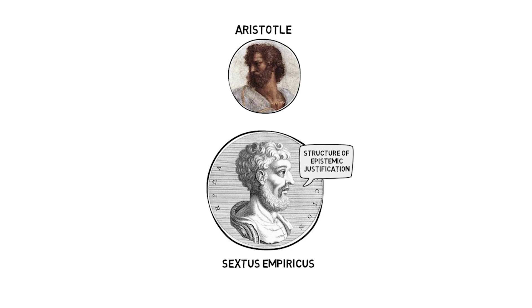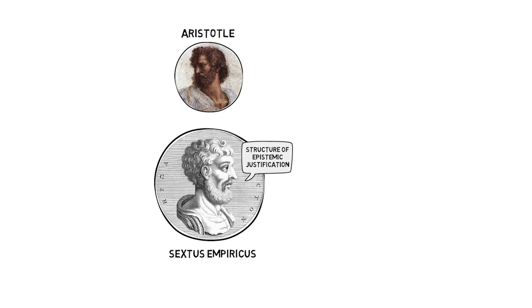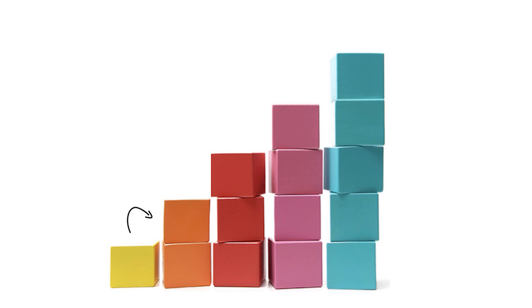So when we explore the regress problem and various responses to this problem, it helps us to get clearer about how our reasons must be related to one another and to the things we believe in order for those beliefs to be justified. Diving into the regress problem, one of the easiest ways to get a handle on it is to consider the sort of questioning that a small child might put forth when discussing things with their parents.